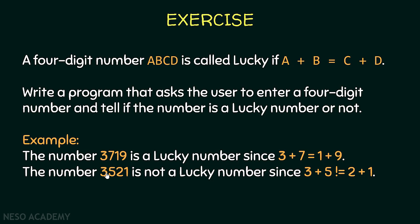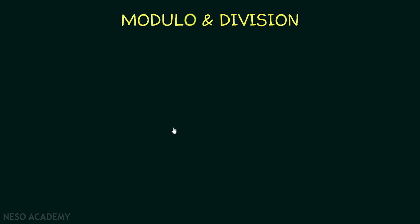Pause the video and after you try to solve the program come back to see my solution. To solve the exercise we're going to use the modulo and division operators. Suppose the four-digit number is 1234. The idea is to extract each digit and then see if the first digit added to the second digit is equal to the third one added to the fourth one.